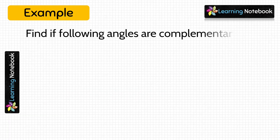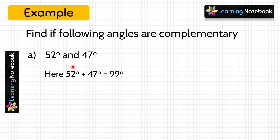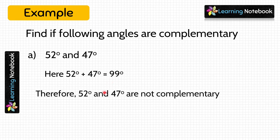Let's move to the next question. Find if the following angles are complementary. First part: 52 degrees and 47 degrees. In this question, we need to check if both these angles are complementary angles or not. We just need to add both these angles and check if their sum equals 90 degrees. So, 52 degrees plus 47 degrees equals 99 degrees. Since their sum is not equal to 90 degrees, both these angles are not complementary angles.